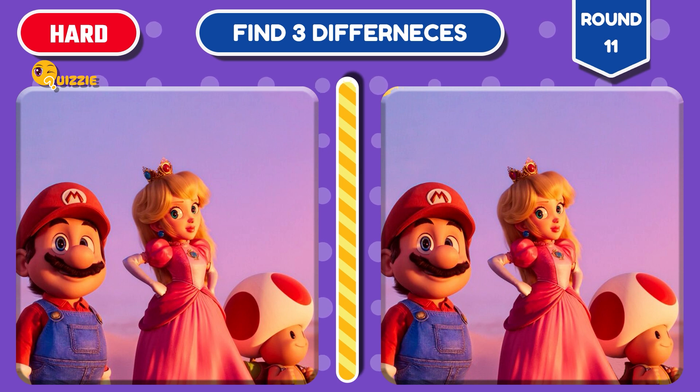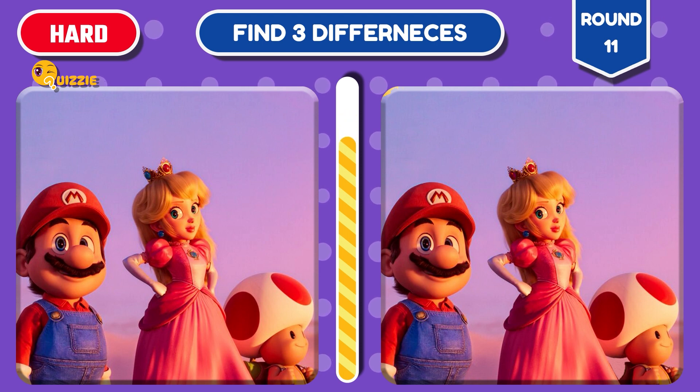Round 11. Next up, it's Mario, Princess Peach, and Toad. Find three differences on the right side.